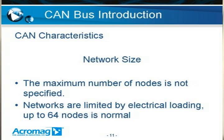The CAN specification does not specify a maximum number of nodes allowed on a CAN bus. Networks are limited by the electrical loading of all the nodes and the drive strength of the weakest transmitters, but typically up to 64 nodes is normal on a CAN bus.